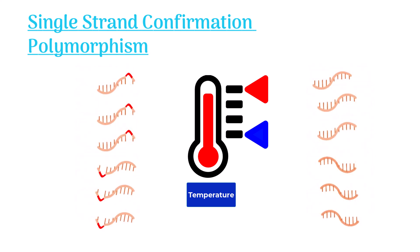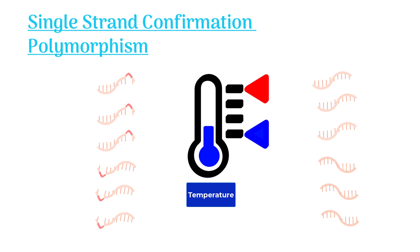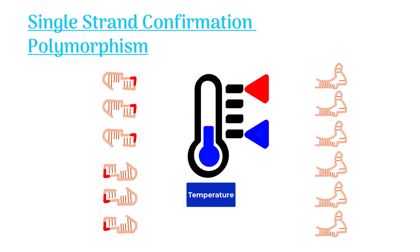In the next step, we cool things down again by lowering the temperature. When the temperature falls down, the separated DNA strands undergo folding.